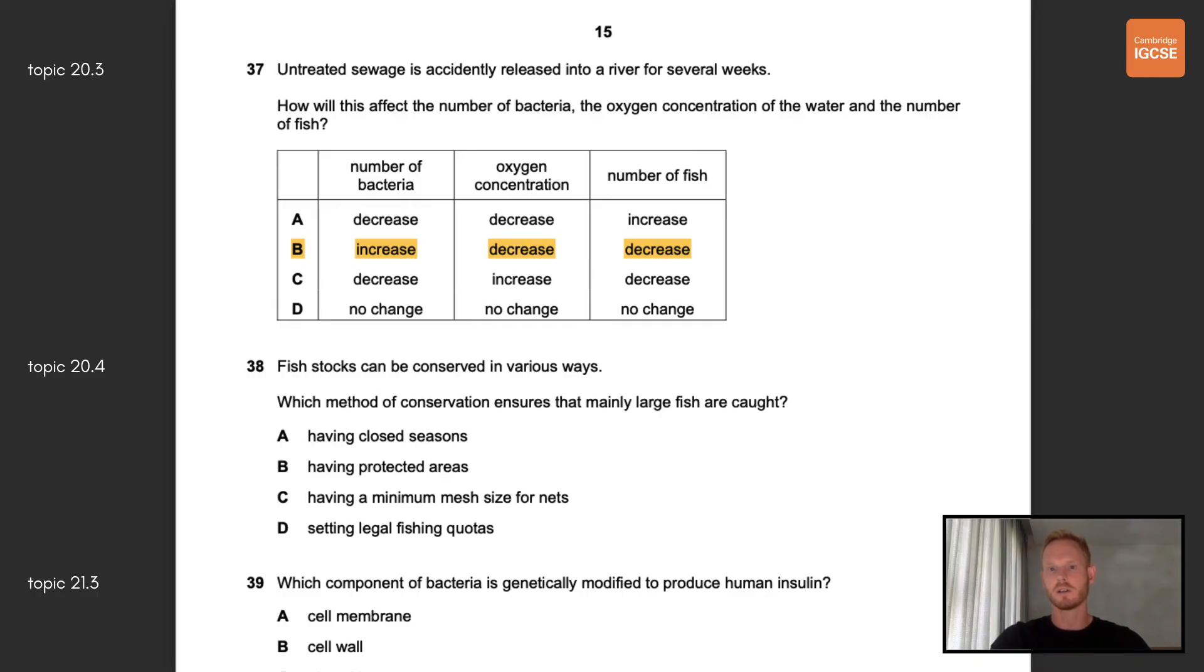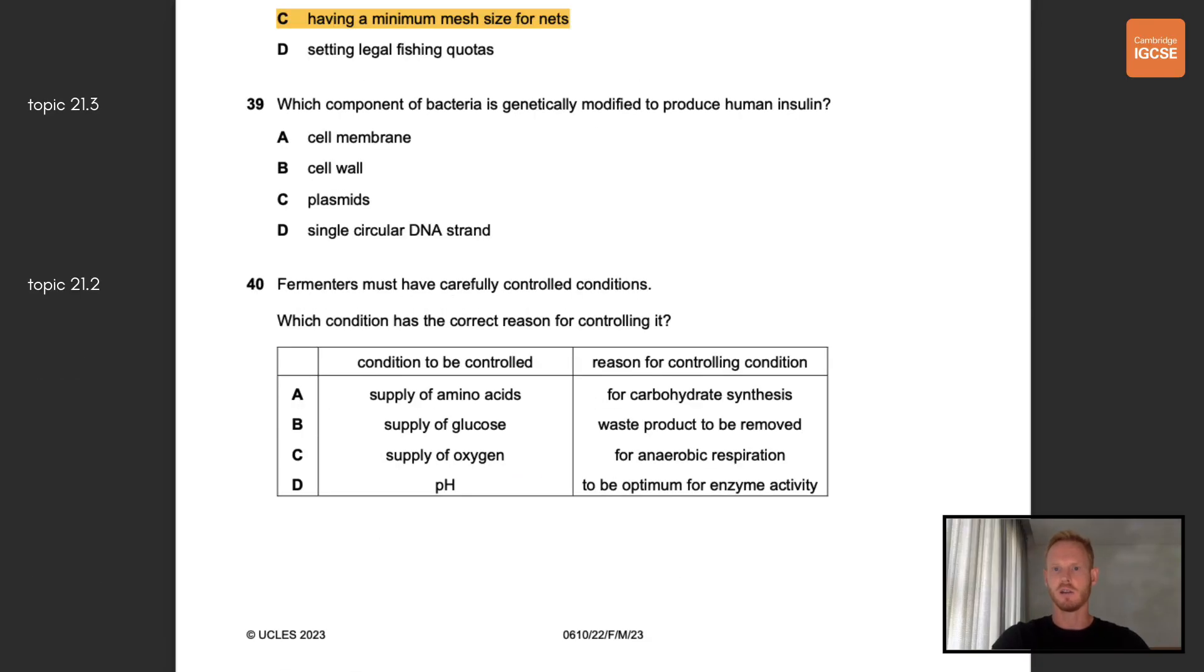Question 38, fish stocks can be conserved in various ways. Which method of conservation ensures that mainly large fish are caught? The correct answer here is C. Having a minimum mesh size for nets allows more young fish to escape, mature, and eventually reproduce. Number 39, which component of bacteria is genetically modified to produce human insulin? The correct answer is C. Plasmids are small circular DNA molecules that can be cut open and human genes inserted.